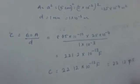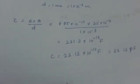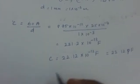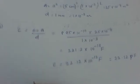Picofarad is 10 raised to minus 12. So the capacitance can be written as 22.12 picofarad.